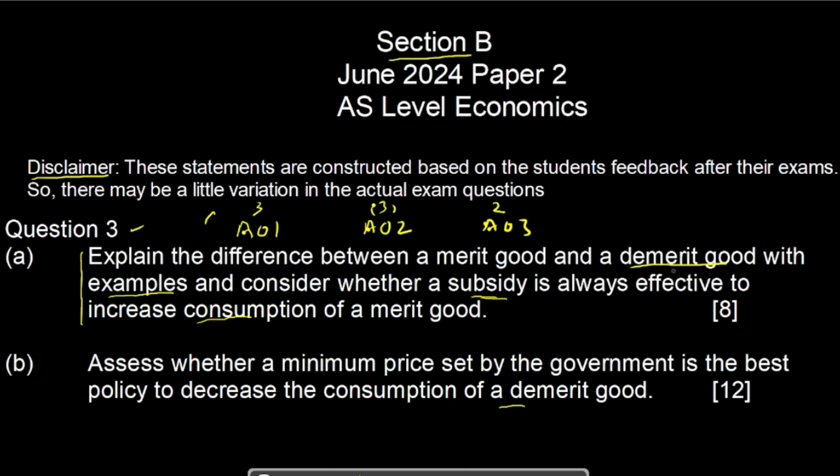Then move to the demerit good. A demerit good is a type of good which is harmful to the consumer as well as the third party — it has negative side effects. Examples include alcohol, cigarettes, and pollution. You can explain that if a smoker smokes, it harms his own health as well as the health of passive smokers.